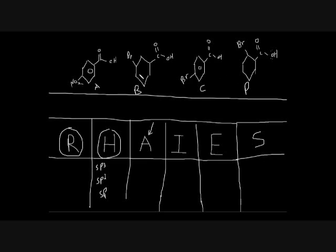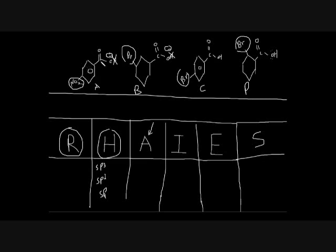We have two factors here. The first is the inductive effect, because the substituents are electronegative — they are electron-withdrawing groups. When you have an electron-withdrawing group, the inductive effect increases acidity. If you look at the conjugate base of the acid — you remove a hydrogen and add a negative charge — chemistry dislikes charges, so the conjugate base is more stable when the molecule has an electron-withdrawing group, because it withdraws electrons and decreases the negative charge, making the conjugate base more stable and the original acid more acidic.